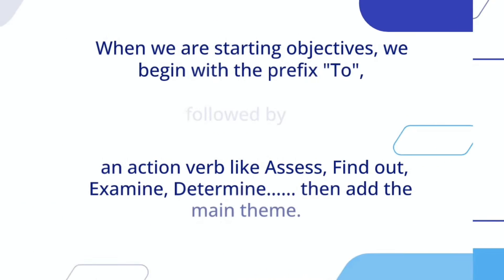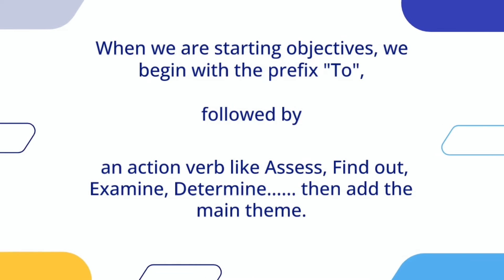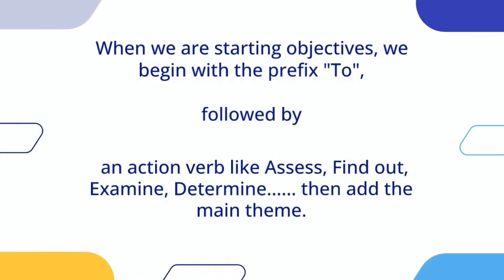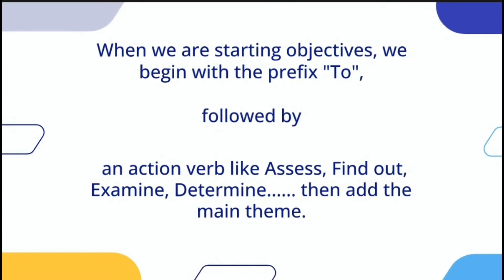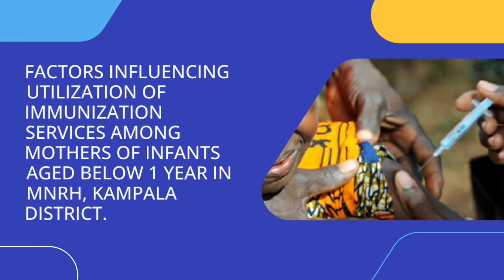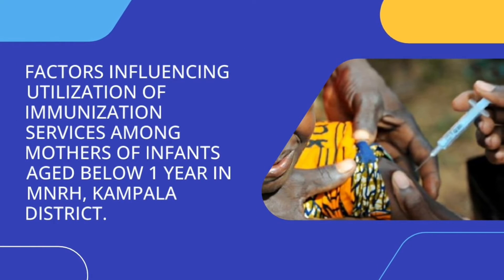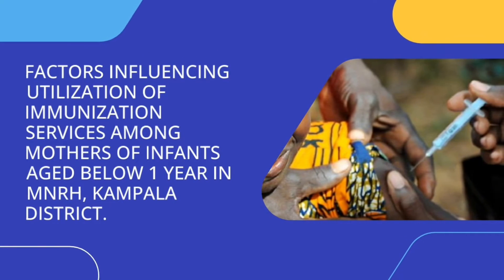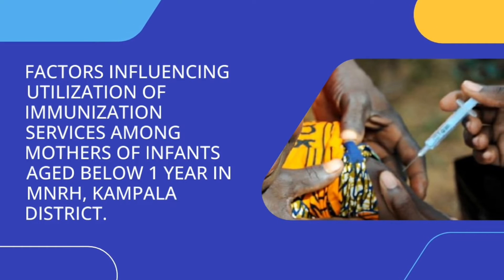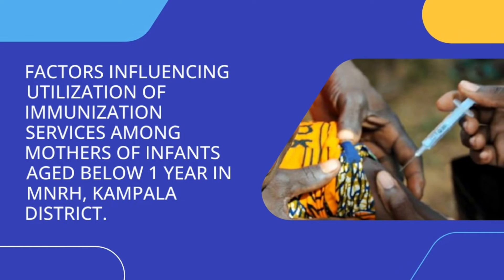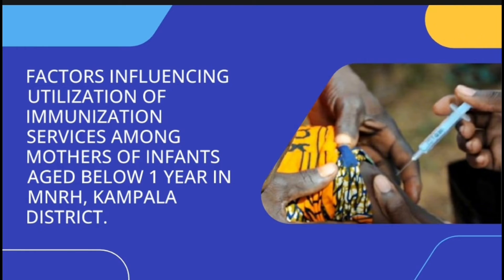When formulating research objectives, we begin with the prefix 'to', followed by an action verb — for example, assess, find out, examine, or determine — then add the main theme. To understand this, let's use an example topic: 'Factors influencing utilization of immunization services among mothers of infants aged below one year in Mulago National Referral Hospital, Kampala District.'